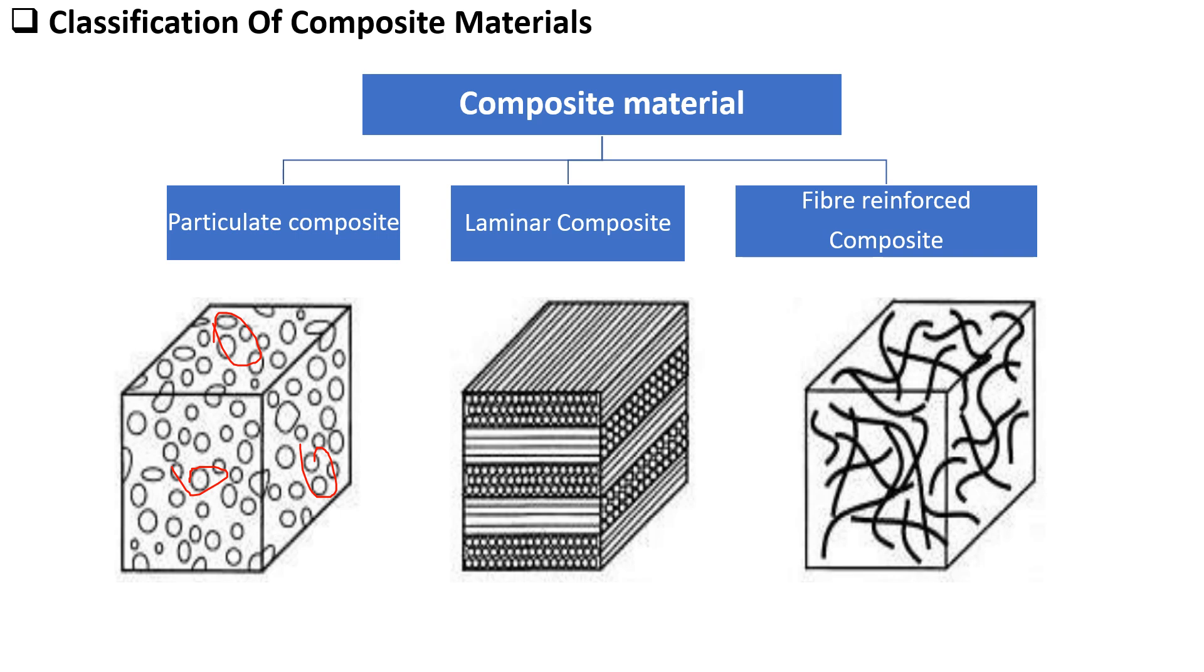Now let's come to laminar composites. Laminar composites are composed of multiple layers. These are different layers composed of multiple layers called laminates. They may be of different materials having different properties which are all bonded together to form a single structure.